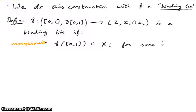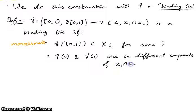The second condition is the tie condition: γ(0) and γ(1)—recall they're in Z₁ intersection Z₂—are in different components of Z₁ intersection Z₂. In our example so far, path components and components will be the same thing.